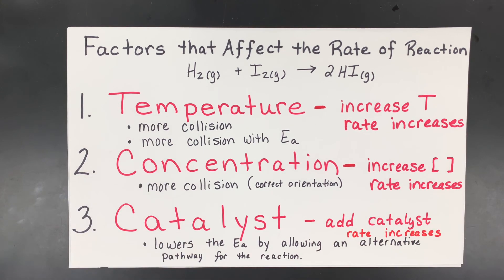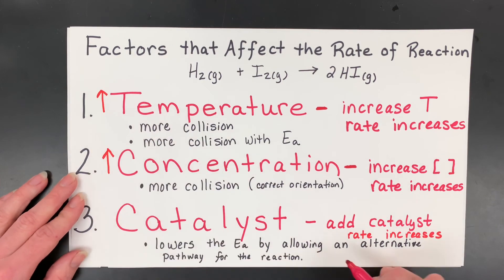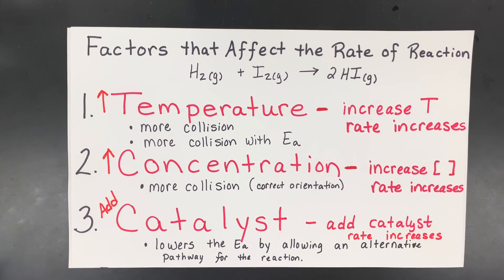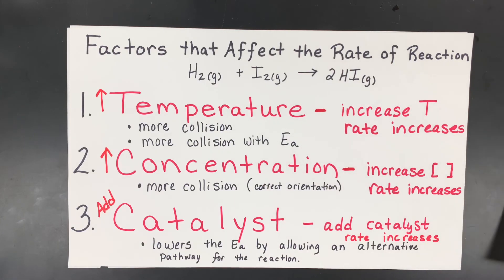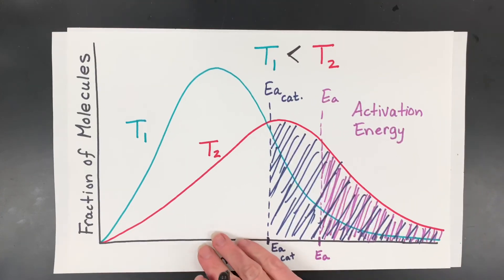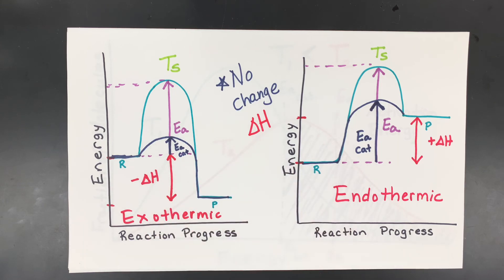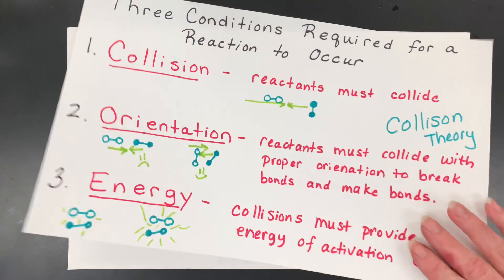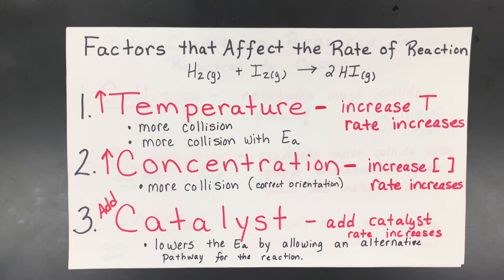So to summarize: I focused on increasing the rate of reaction. You can do this by increasing the temperature, increasing the concentration, or adding a catalyst — or all three together for a drastic change. We were altering the three collision theory conditions every time. If you haven't watched the previous collision theory and reaction rate video, that would be a good one to watch. I hope this video helped you understand the factors that affect the rate of a reaction. Good luck, chemists!